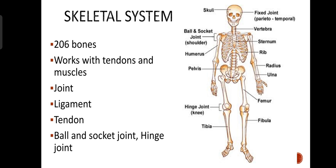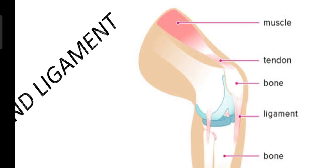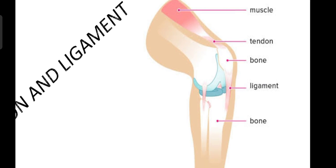Now we will define terms like joint, ligament, and tendon, and look at how many types of joints there are. First, we will see what tendon and ligament are. As you can see in this diagram, when a bone is connected to a bone, a ligament connects bone to bone. And a tendon connects a muscle to a bone. This is the difference between a tendon and a ligament.